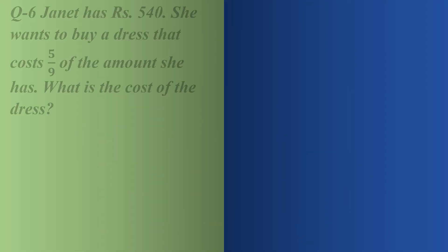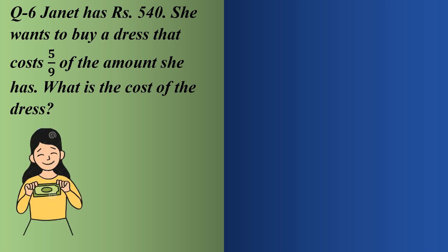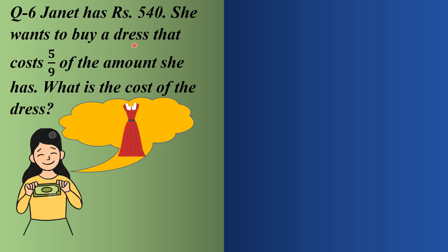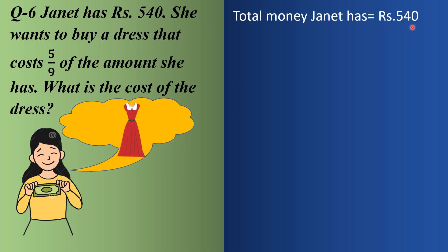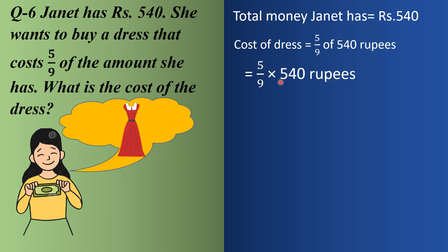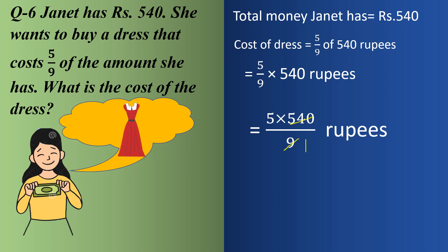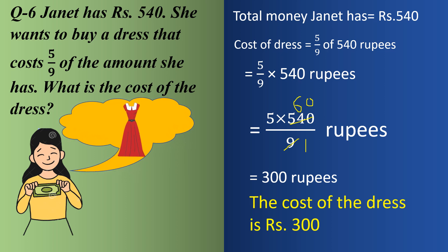Last word problem: Zainit has rupees 540. She wants to buy a dress that costs 5/9 of the amount she has. What is the cost of the dress? Total money is rupees 540. Cost of dress equals 5/9 of 540 rupees. Replacing 'of' with multiply and solving: 5 multiplied by 540 by 9. Since 9 sixes are 54, the answer is 300 rupees. The cost of the dress is Rs. 300.